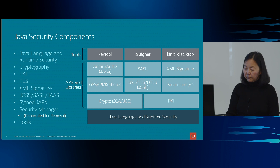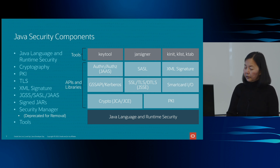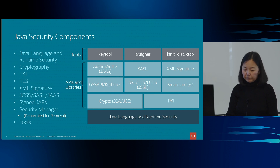Once the bytecodes have been verified, the Java runtime prepares them for execution. There are also the usual access modifiers that can be assigned to classes, methods, and fields, restricting access to class components as needed — for example, private, protected, package-private, and public. In JDK 9, we added support for modules, but that is out of scope for today's discussion.